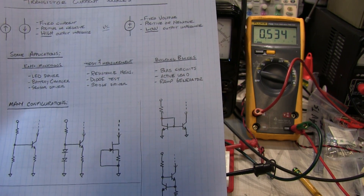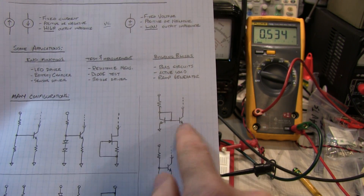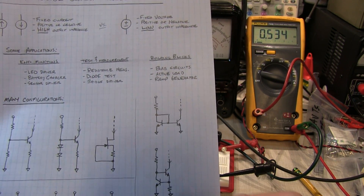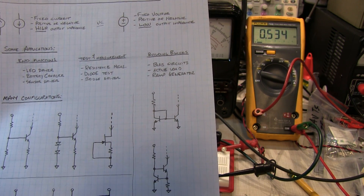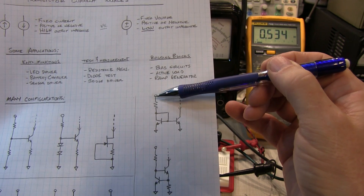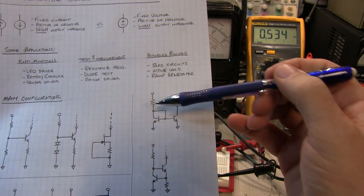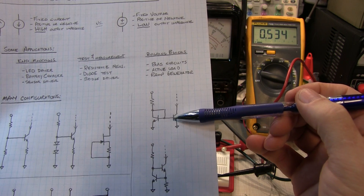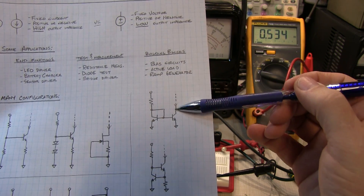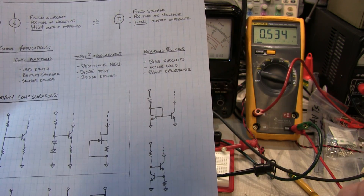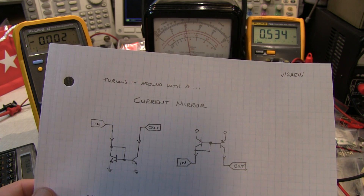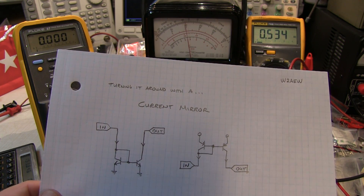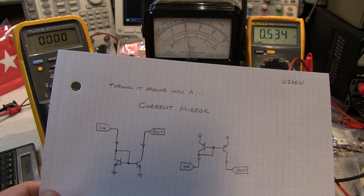One of the configurations we talked about earlier is called a current mirror. If two transistors are matched, the current flowing through one collector mirrors the current flowing in the other. We can use current mirrors to do interesting things, like turn currents around — turning a current sink into a current source and vice versa.